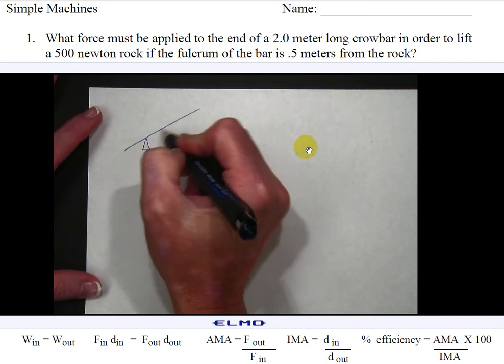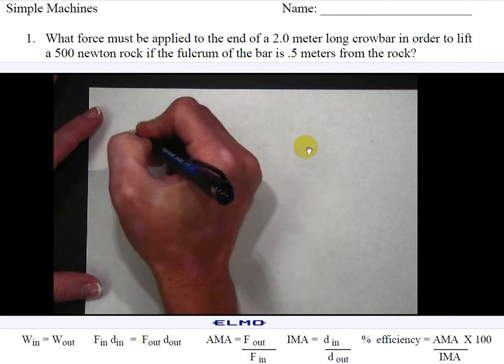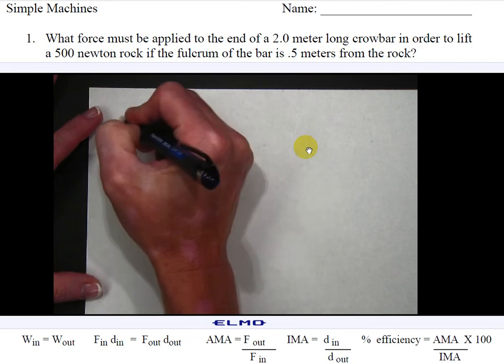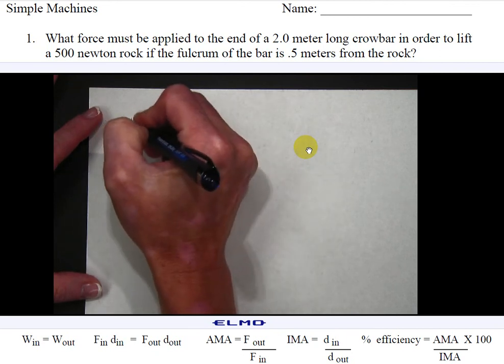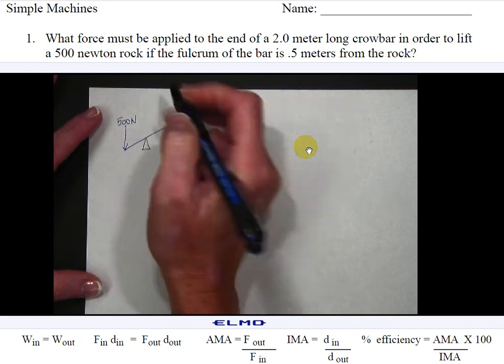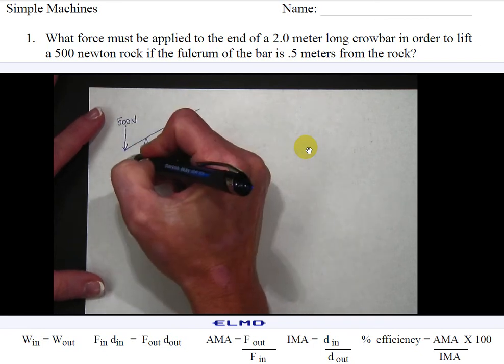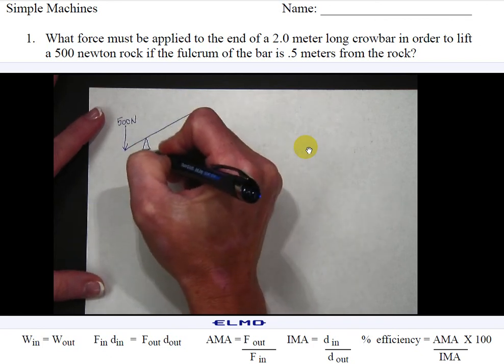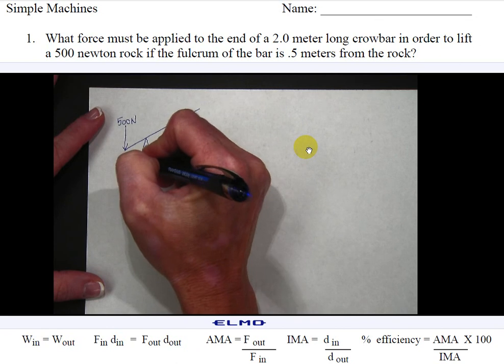So I've drawn here a crowbar with a fulcrum and on one end I'm going to place the 500 Newton rock. I'm going to draw an arrow to represent the force of the rock acting down and then my distance from the fulcrum to the rock is 0.5 meters.